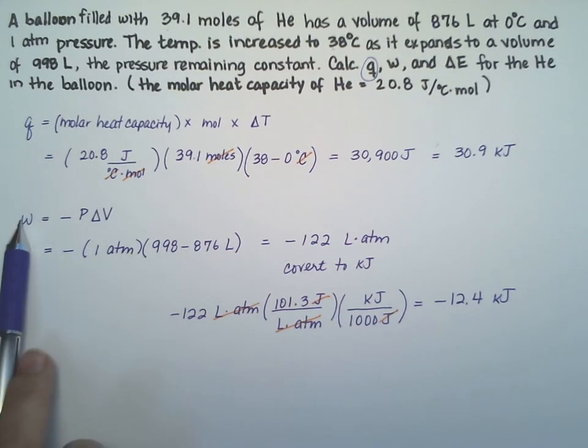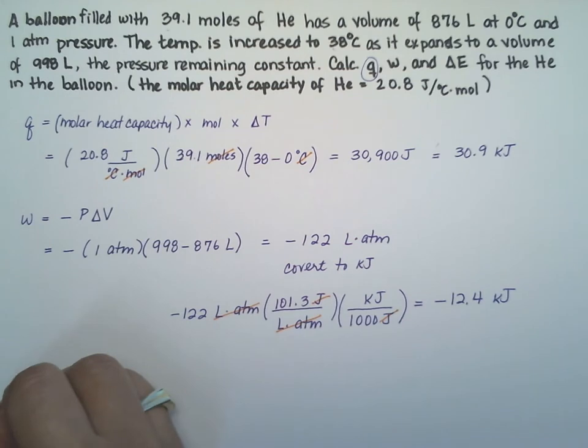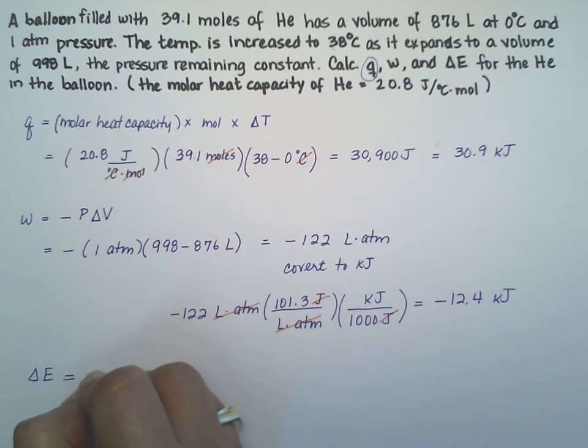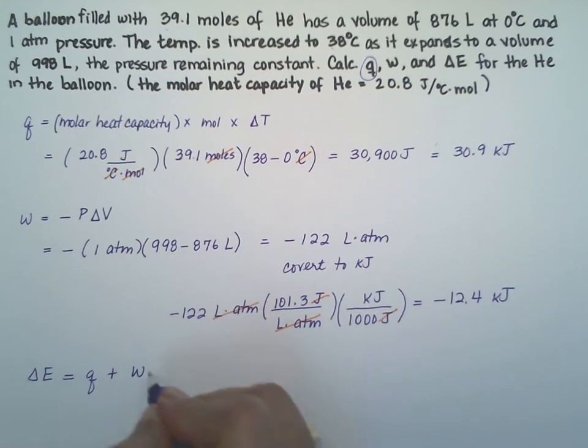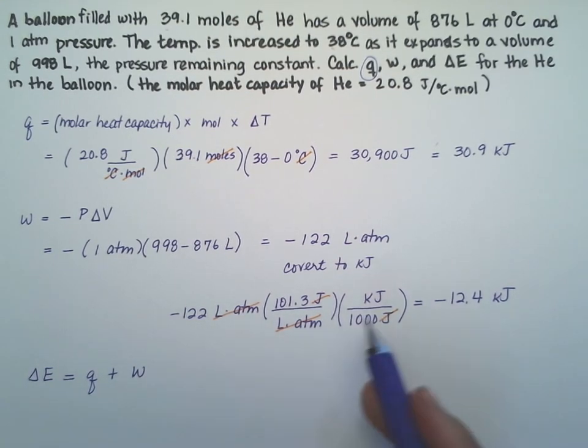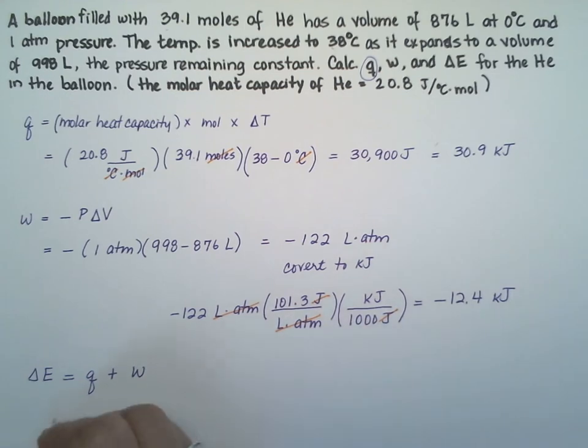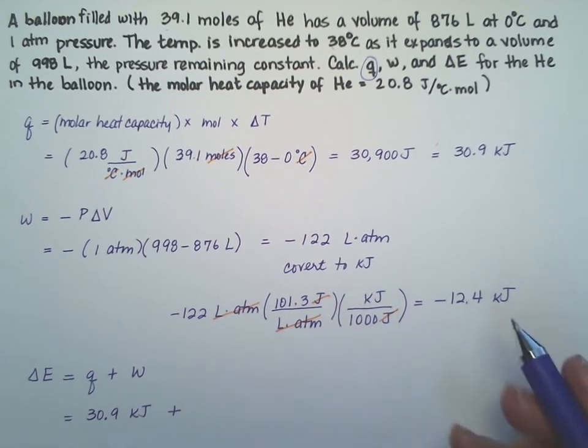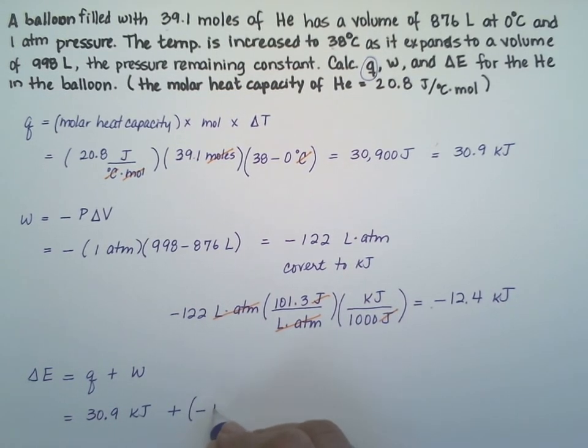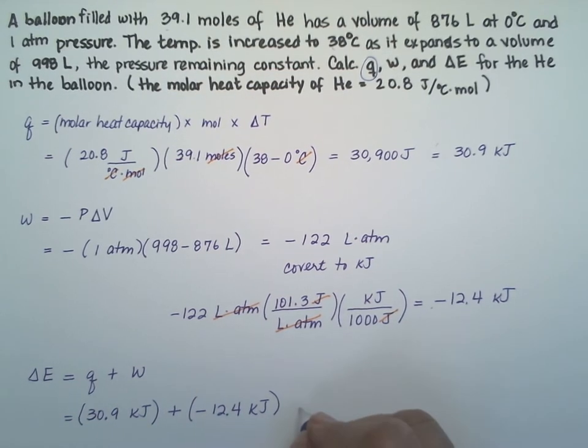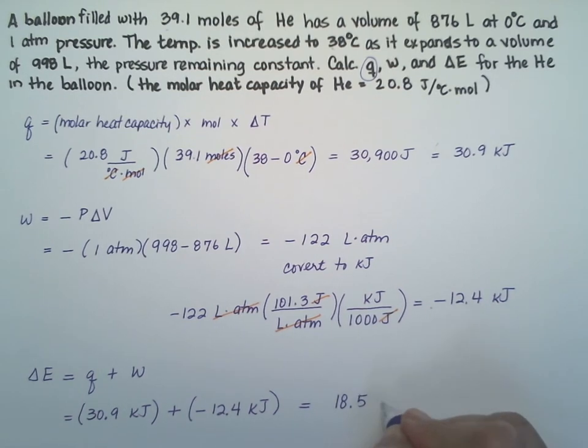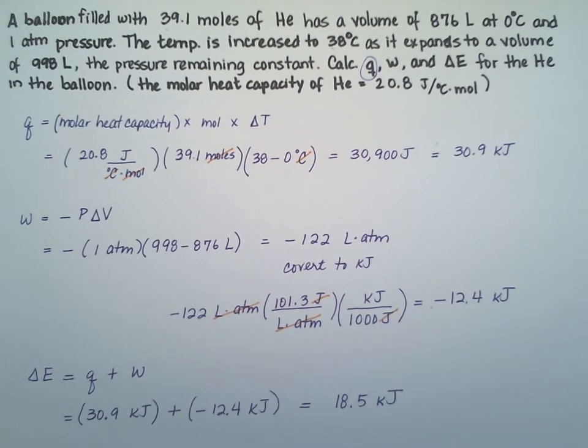All right, we have the heat, we have the work. We're ready to calculate delta E. Delta E, the change in energy, is equal to the heat plus the work. And we have 30.9 kilojoules and minus 12.4 kilojoules as our work. I'm going to put this in parentheses. And the final is 18.5 kilojoules is our change in energy for the balloon.